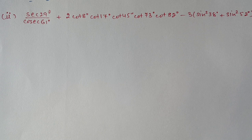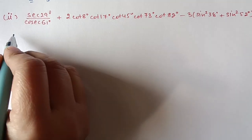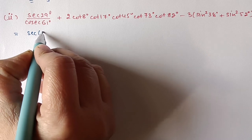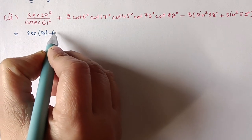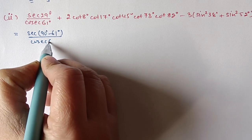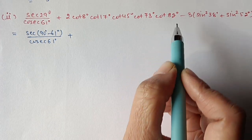Next is the second part of question number 5: sec29 upon cosec61 plus 2·cot8·cot17·cot45·cot73·cot82 minus 3(sin²38 plus sin²52). In the first term, from numerator and denominator any one we have to change: sec29 we can write as sec(90−61) upon cosec61.